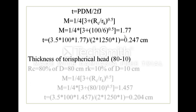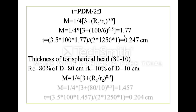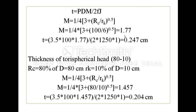For the 80-10 torispherical design, rc is 80% of D and rk is 10% of D, giving an rc/rk ratio of 80/10. The stress intensity factor m for the 80-10 design is 1.457. Substituting into t = p·D·m / (2·f·j), the thickness for this torispherical 80-10 head is 0.204 cm.